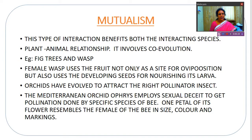Such type of mutualism we see in plants and animals. Animals — that is birds and bees — depend on plants for food material, and plants also depend on birds and bees for pollination. Even for seed dispersal, plants depend on animals, and animals are getting food from the plants. So plants and animals are in a relationship where both are getting benefit, which is called mutualism.